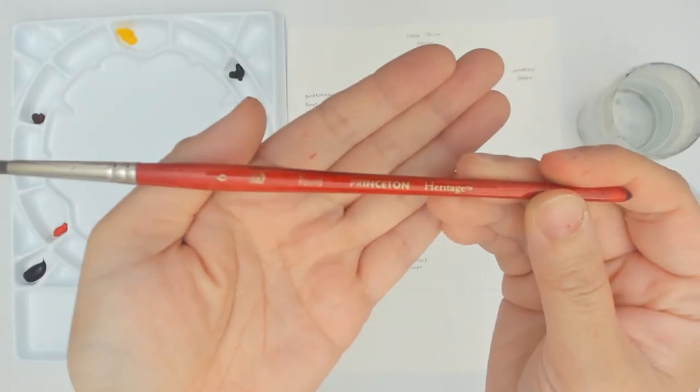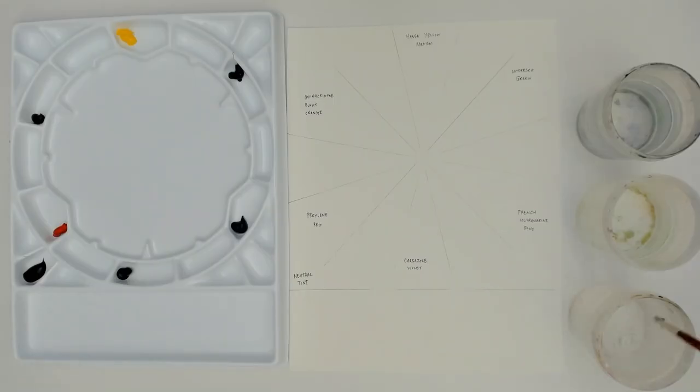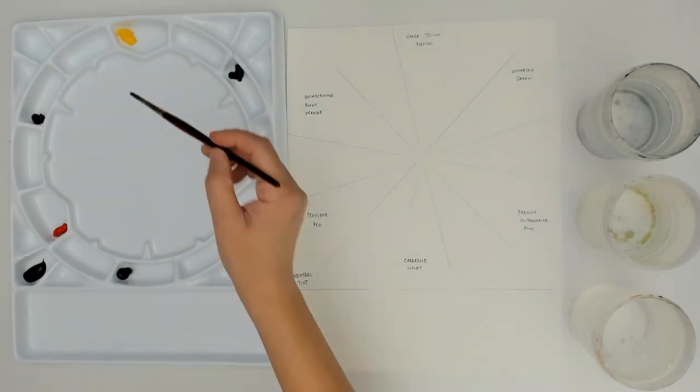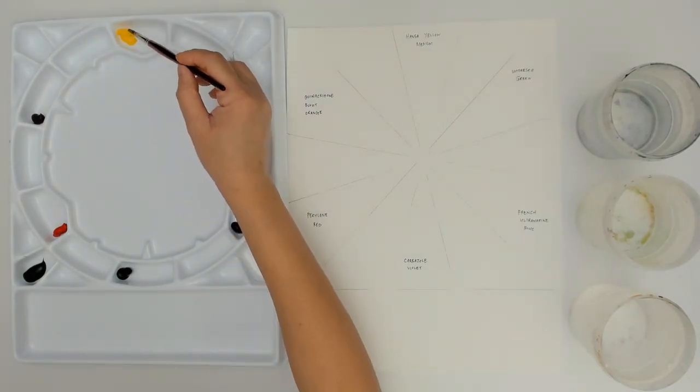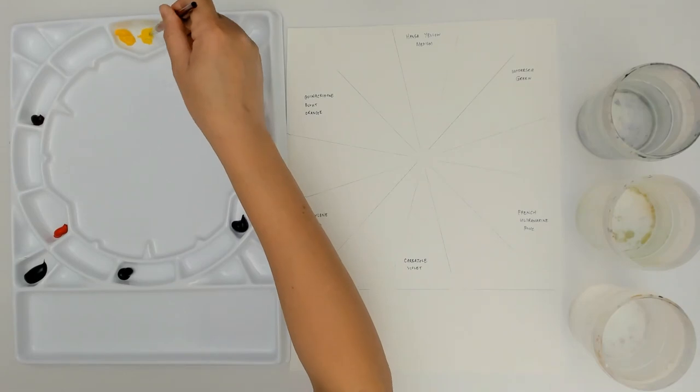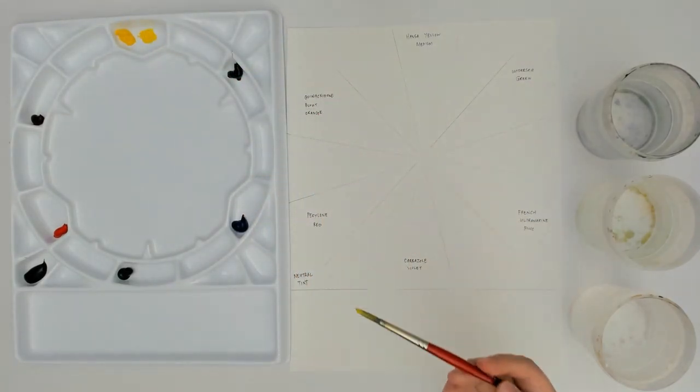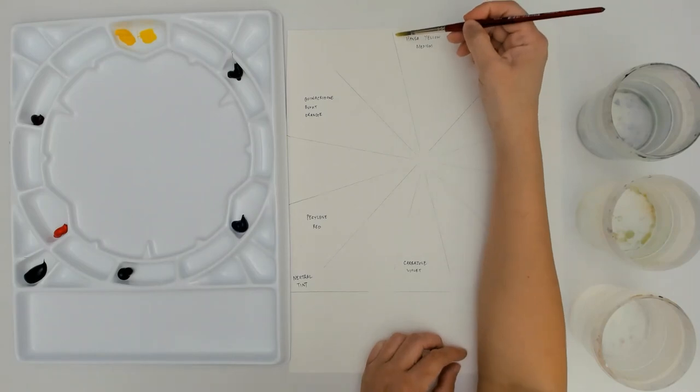To swatch out the colors, I'm using my Princeton Heritage size 6 watercolor brush and 3 cups of water. I dip my brush in the clean water and I start out with yellow. I always like to start out with yellow because it's the lightest color and it's the color that gets contaminated the easiest. So to keep it clean, it's always easiest to start with that color.